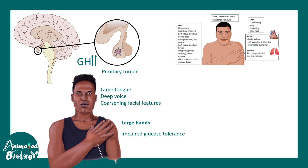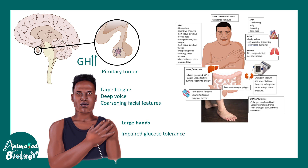There can be heart-related issues with malforming valves and left ventricular hypertrophy. There can also be lung-related issues, and a multitude of problems can occur in these individuals. So even if they have a large, strong-looking body, their internal organs are in many ways compromised.